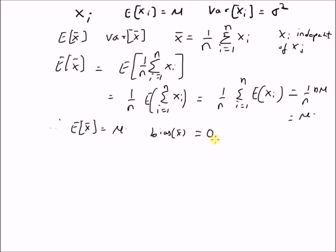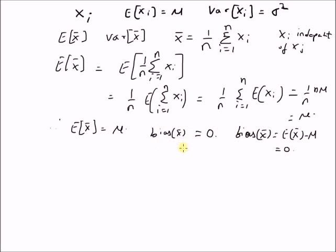That is, the sample mean is an unbiased estimator. This is because bias is defined as expectation of X-bar minus the true value, and here expectation of X-bar is mu. Therefore this is equal to 0, and X-bar, that is the sample mean, is an unbiased estimator.